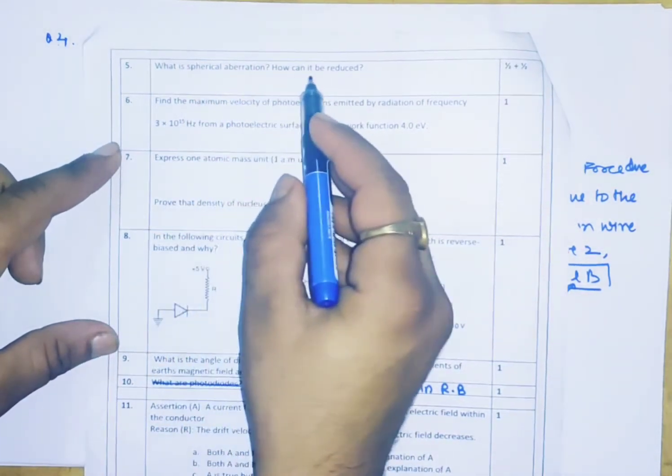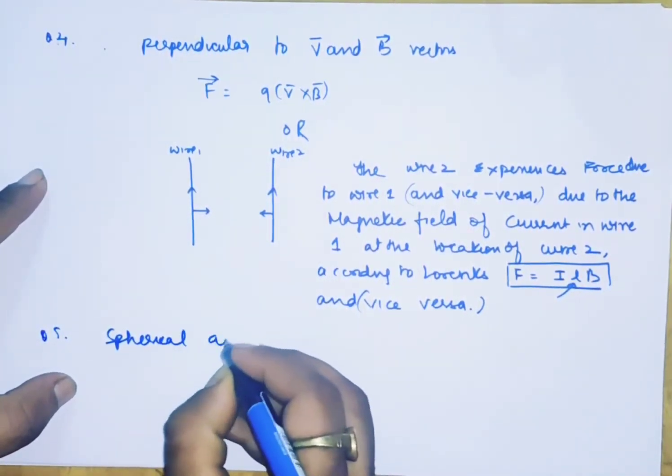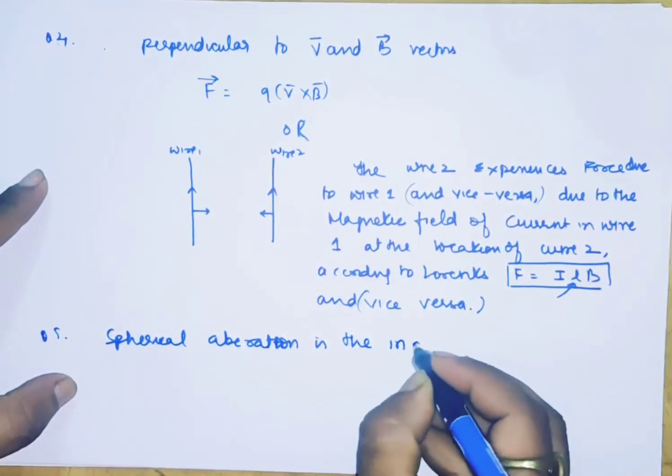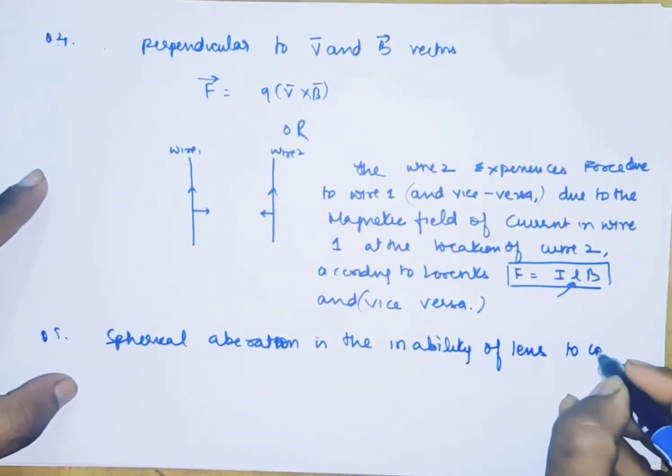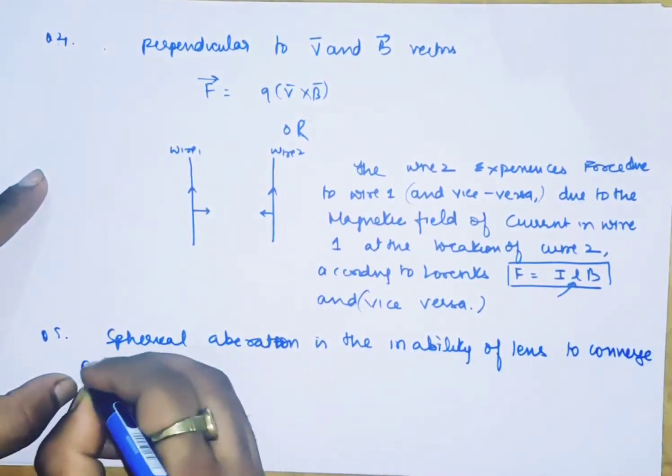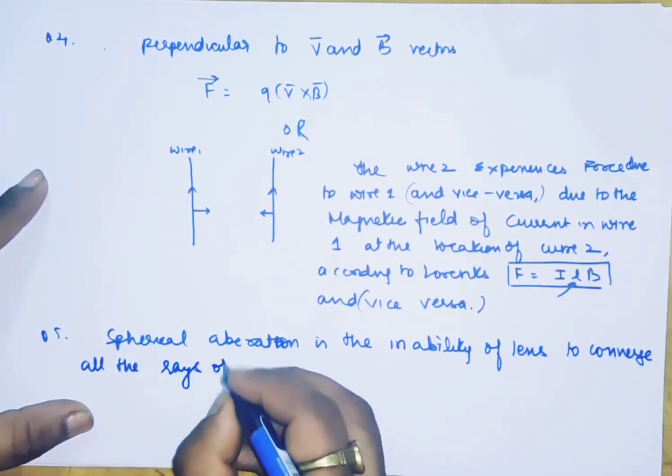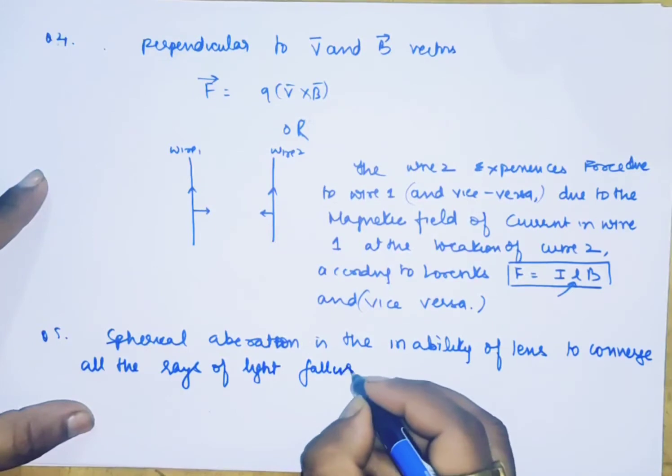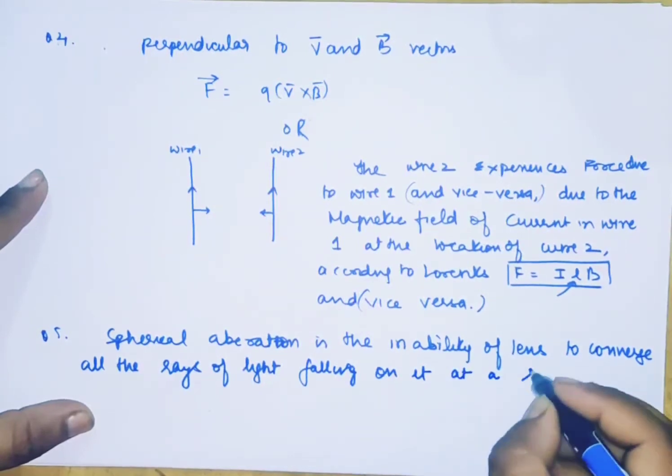What is spherical aberration? How can it be reduced? Spherical aberration is the inability of a lens to converge all the rays of light falling on it at a single point.